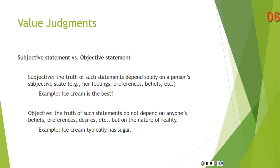There's a distinction as well between subjective statements and objective statements. For a subjective statement, the truth of these statements depends solely on a person's subjective state or feelings, preferences, or beliefs. The example we've been using is: ice cream is the best. If Mary claims that ice cream is the best, the truth of that depends solely on how she feels about ice cream, how ice cream tastes to her, her beliefs about ice cream. And it's not really some feature out there in the world, some fact about ice cream that it's the best.